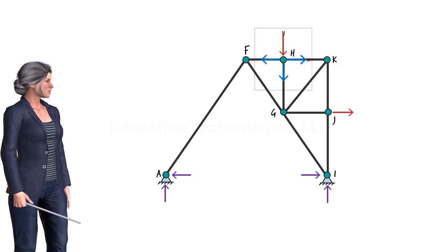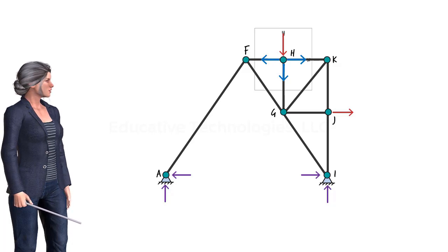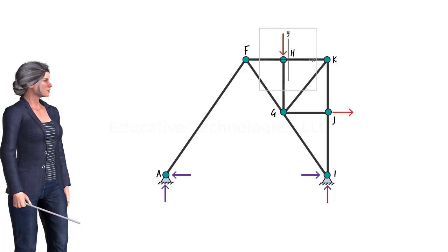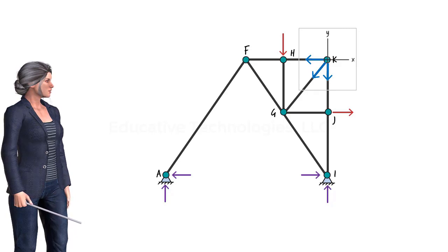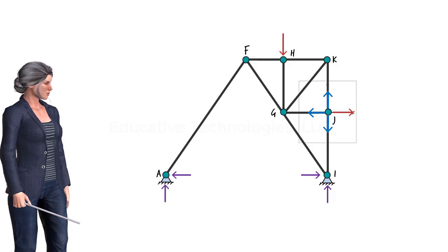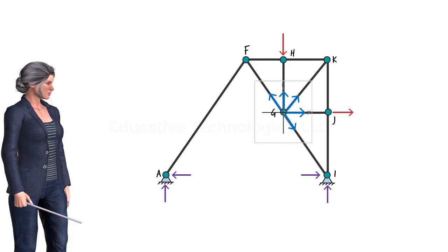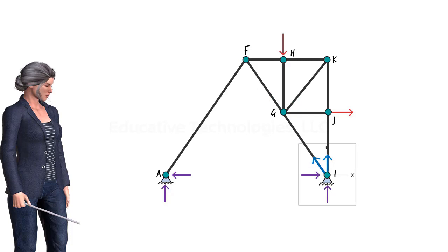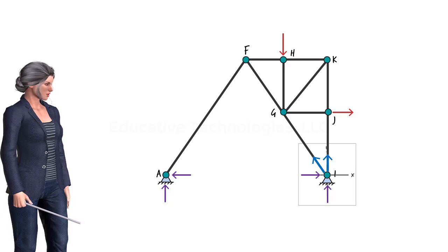Joint H is subjected to four forces — two in the X direction and two in the Y direction — therefore none of the member forces can be said to be zero. At K, although there are only three forces present, they yield two X components and two Y components, so neither member can be said to be carrying a zero force. Joint J is similar to joint H with four forces present, hence no member can be said to be carrying a zero force. Joint G is subject to five forces, so obviously none of the members can be said to be carrying a zero force. Finally, at joint I, the existing four forces create multiple force components along both axes, therefore neither of the two member forces nor the support reactions can be said to be zero.